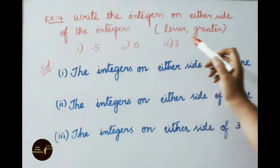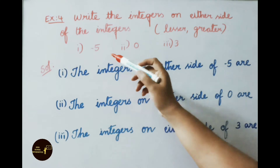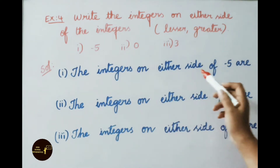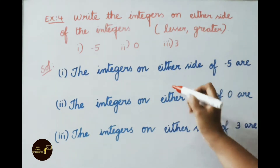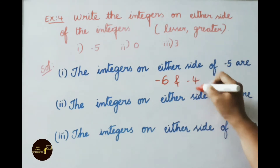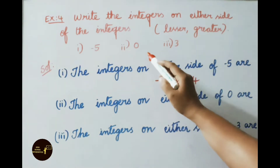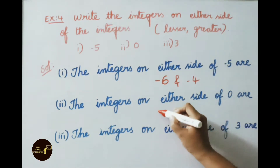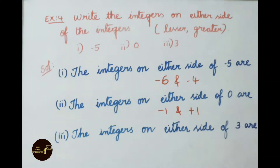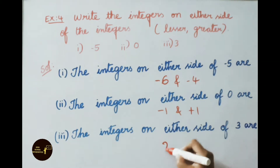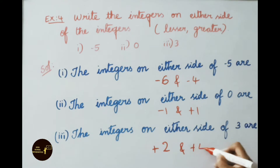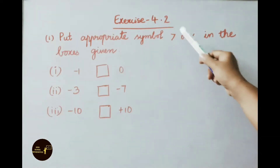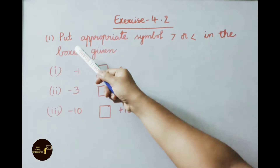See Example 4: Write the integers on either side of the given integers, that is the lesser and greater integers. For minus 5, the integers on either side are minus 6 and minus 4. For 0, the integers on either side are minus 1 and plus 1. For 3, the integers on either side are plus 2 and plus 4.